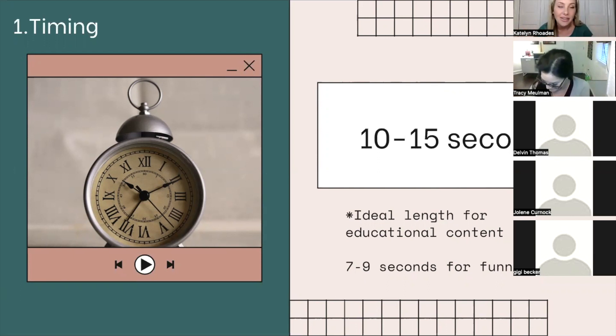And those only last between seven to nine seconds. So if it's a funny reel that you're just trying to get some humor out of and play around with your audience, then of course do a seven to nine second reel. But if it's something that's more educational and you have good content to put out there, that's when you're going to be around 10 to 15 seconds.